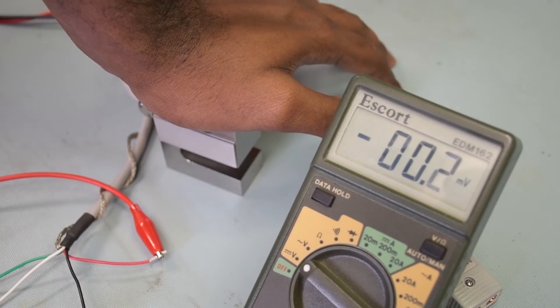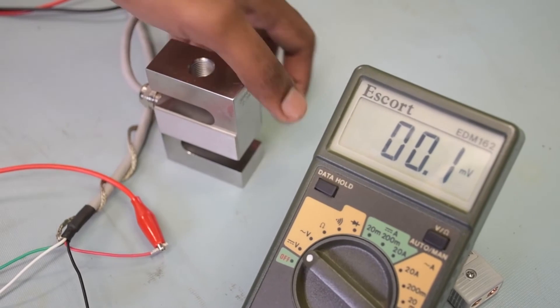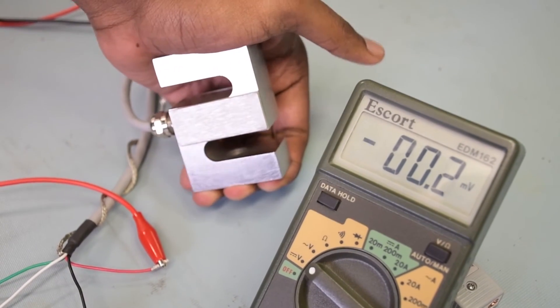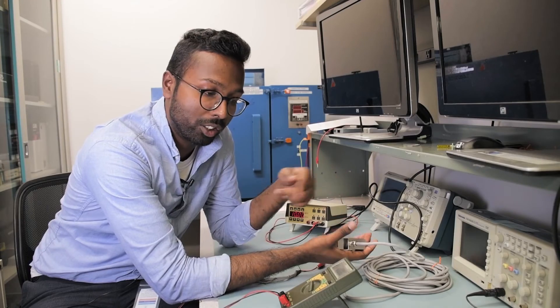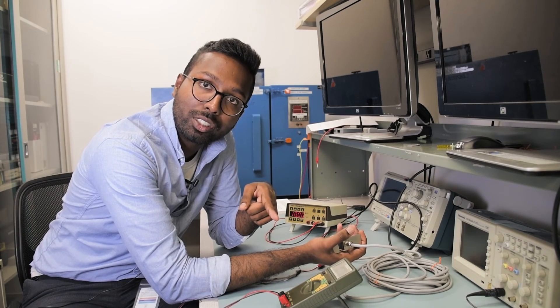Now, if you have a calibrated weight source or a calibrated dead weight of half scale or full scale of the rated capacity of the load cell, you can apply that on the load cell to see if it matches the normalized data that you see on the calibration certificate.